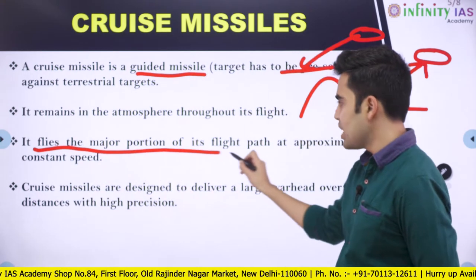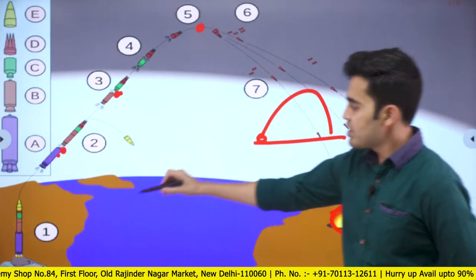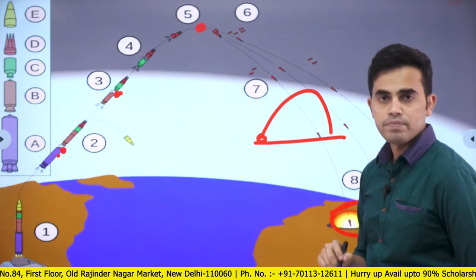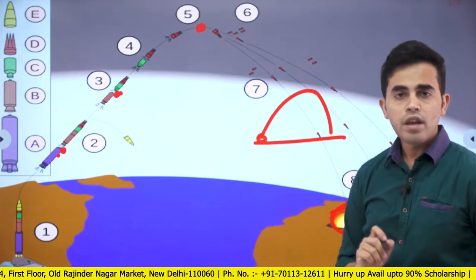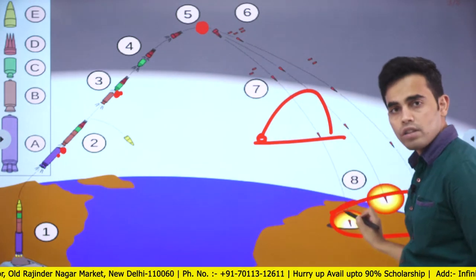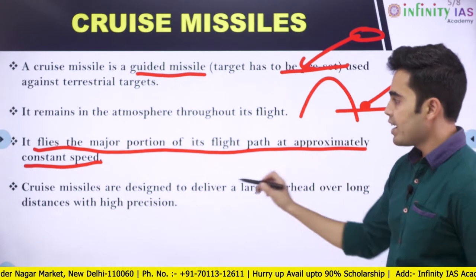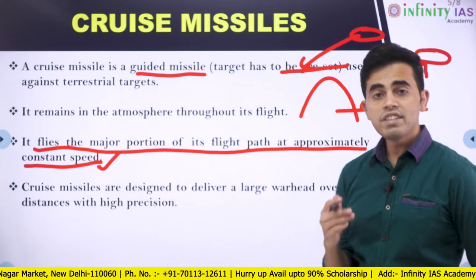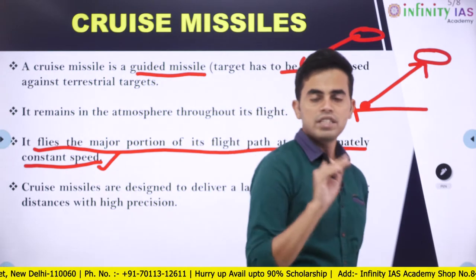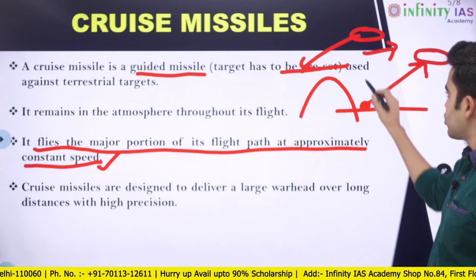A cruise missile flies the major portion of its flight path at a constant speed. A ballistic missile's velocity reaches zero at its highest point before falling down onto the earth's surface. But a cruise missile is guided throughout its entire flight path and is propelled throughout its flight, so it can maintain a constant speed throughout.